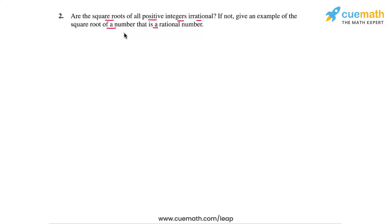Well, the square root of a positive integer is not irrational if the integer is a perfect square of another integer. For example,